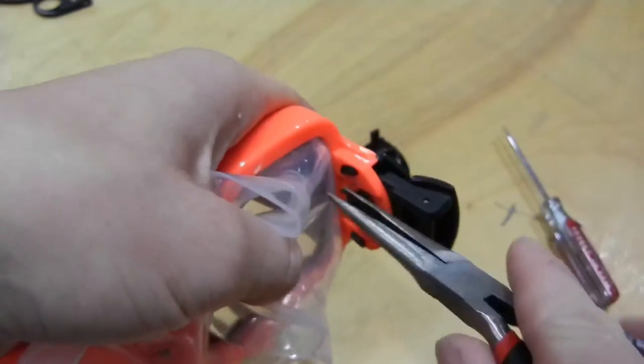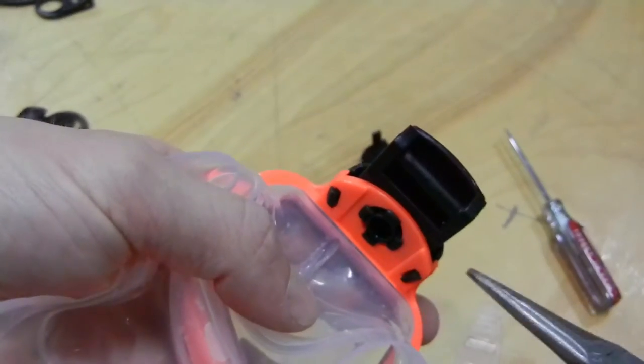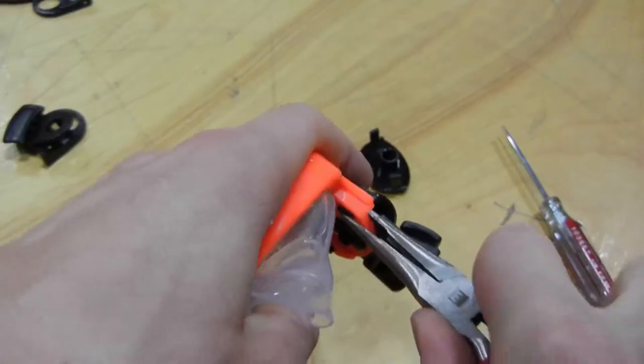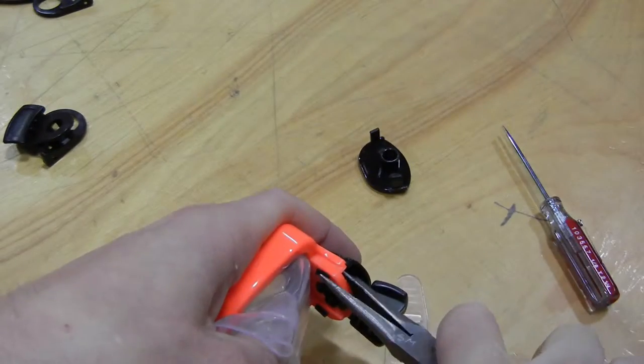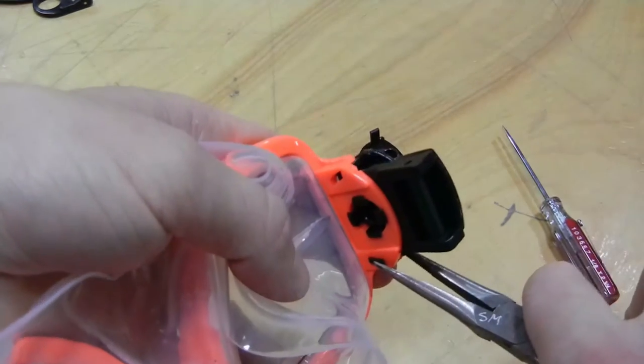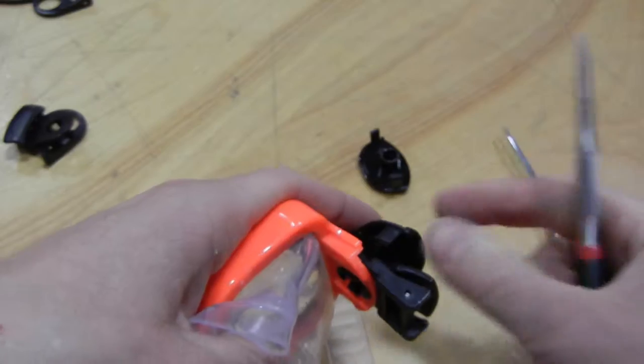If you're taking this out, there are two lock tabs here and here. You need to depress those or break them to get this piece out. Grab a pair of pliers and snap those out and then that piece will come out.